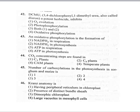Coming to the 45th question: the number of carboxylations in photosynthesis in sorghum and maize is option 1: 1, option 2: 2, option 3: 3, option 4: 4. Sorghum and maize are C4 plants, so the number of carboxylations is 2 — one in mesophyll cells and one in bundle-sheath cells. So the correct option is 2.